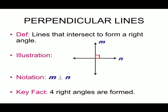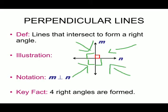Key fact: four right angles are formed when two lines are perpendicular. Here you can see the four right angles formed — one, two, three, and four. Four right angles are formed whenever two lines are perpendicular.